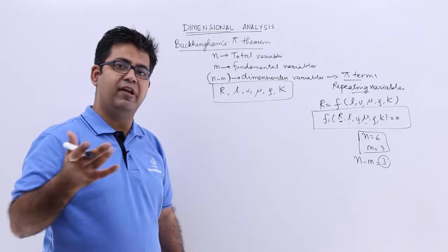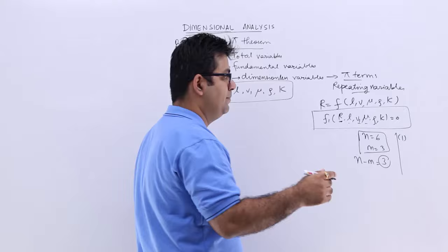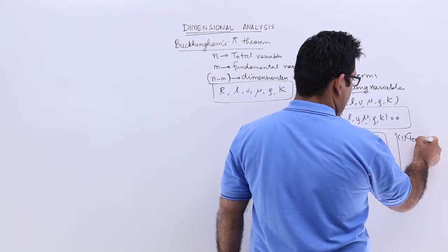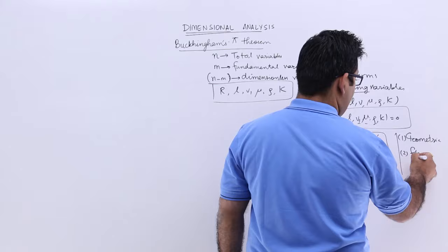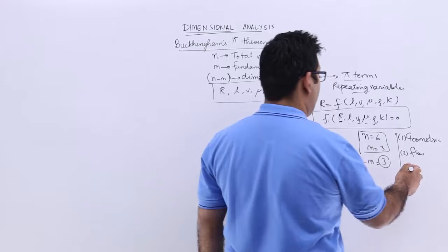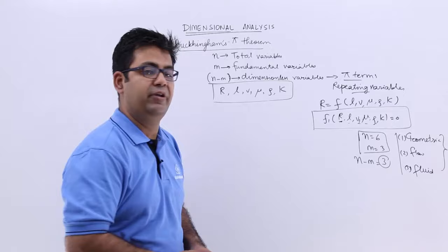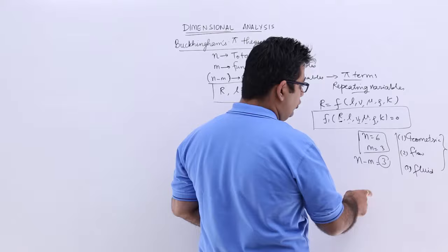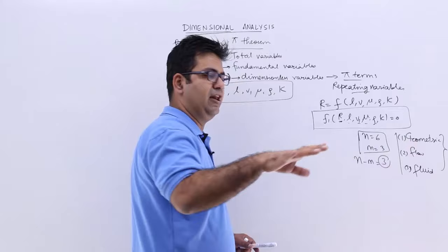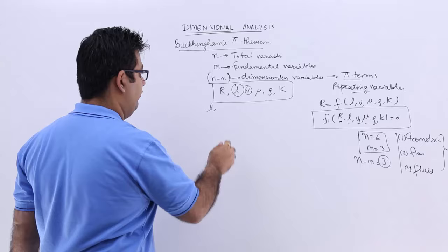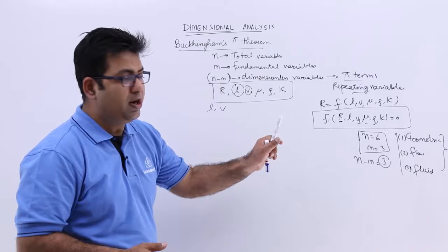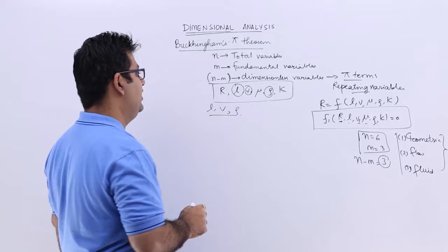Repeating variables should be chosen in this manner: at least one of the repeating variables should have a geometric property, one should have a flow property, and the repeating variables should also include a fluid property. So a variable which gives you a geometric property is length — L becomes the first repeating variable. The flow property is given by velocity — V becomes the second repeating variable. The fluid property is given by density — rho is the third repeating variable.